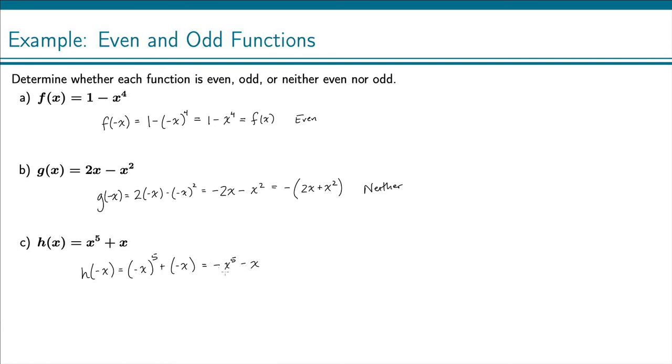So this function here is what we end up with. It's not the original function. However, if we factor a negative out, we get negative times x to the fifth plus x, and that is the original function. So this is −h(x).